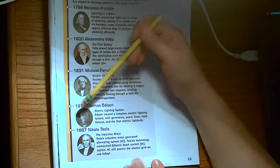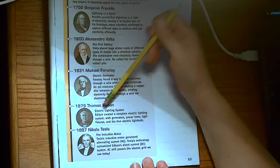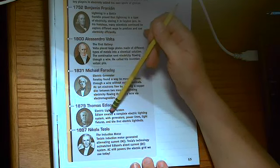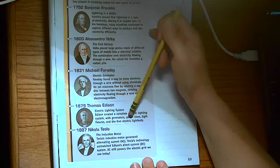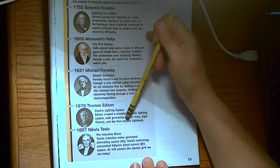Next in 1879 we have Thomas Edison, the electric lighting system. Edison created a complete electric lighting system with generators, power lines, light fixtures, and the first electric light bulb.